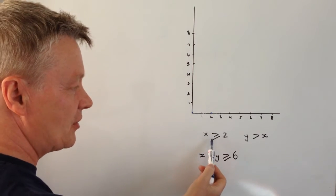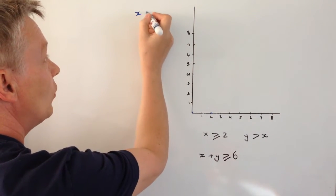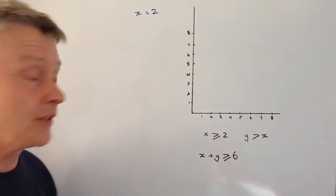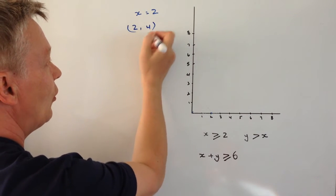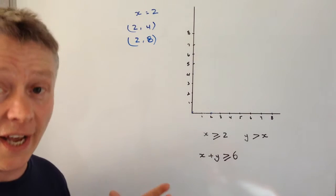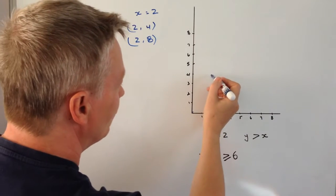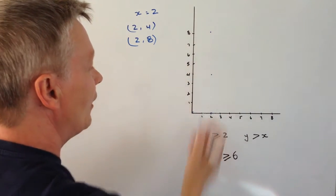So the first thing is I've got x is greater than or equal to 2. Well the first thing I need to do is I need to work out where x equals 2 is on the graph that they've given to me. Well where x equals 2, let's say I've got 2, 4 or I've got 2, 8. They're all coordinates where x equals 2. So if I plot those on the graph I've got 2, 4 looks a little bit like that and 2, 8 looks a little bit like that.